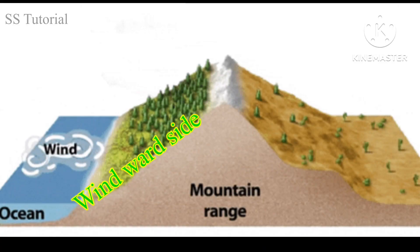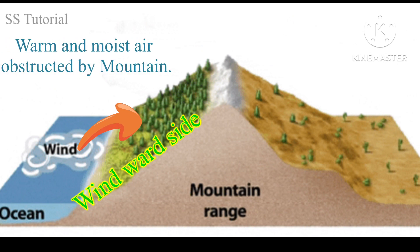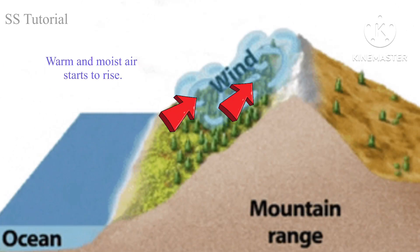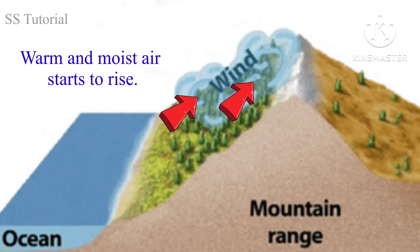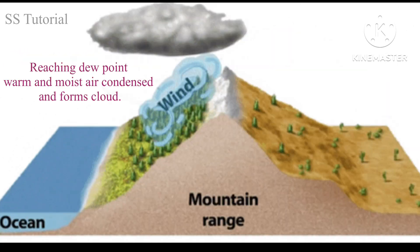In the mountain area, when a huge amount of warm air filled with water vapor is obstructed by mountains, this warm air starts to move upward along the mountain slope. After reaching the dew point, it condenses and forms a cloud.